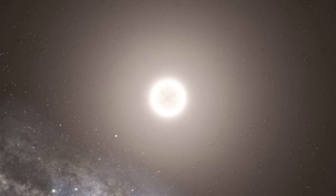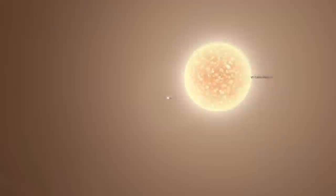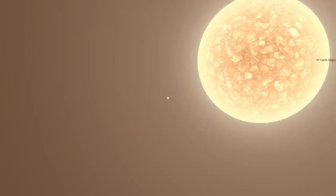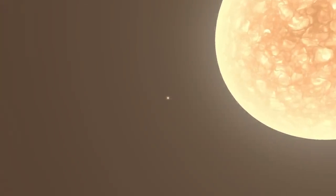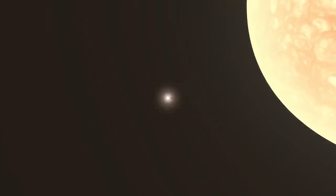Several factors are considered for calculating the habitable zone, the most important being the size and type of star. Hotter stars will push the habitable zone further out, whereas cooler stars will require planets orbiting much closer to remain within this zone.